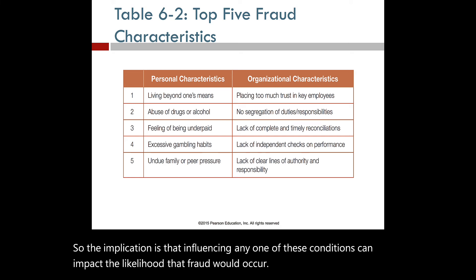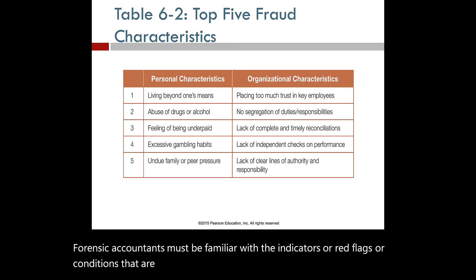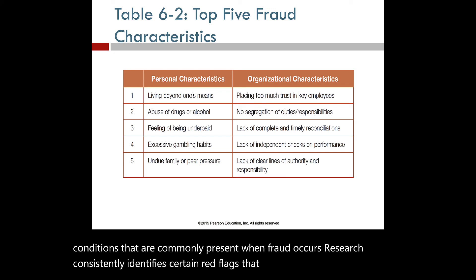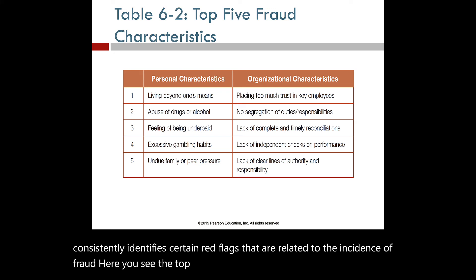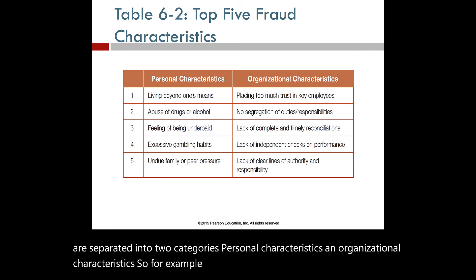Forensic accountants must be familiar with the indicators, or red flags, or conditions that are commonly present when fraud occurs. Research consistently identifies certain red flags related to the incidence of fraud. The top five indicators of fraud are separated into two categories: personal characteristics and organizational characteristics. For example, in personal characteristics, the fraudster is living beyond their means.